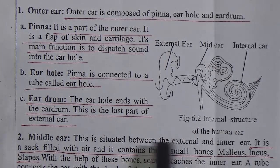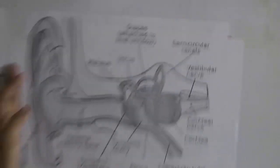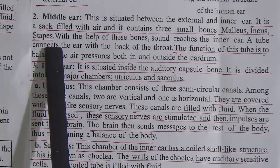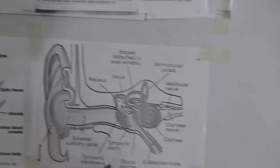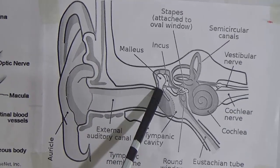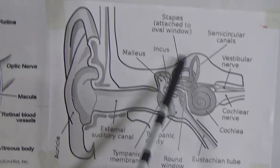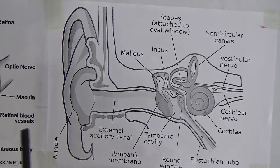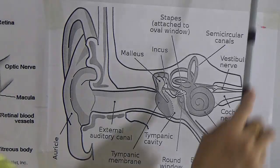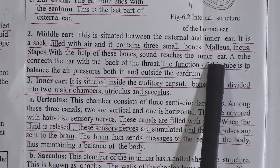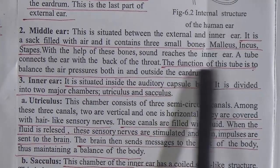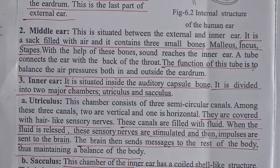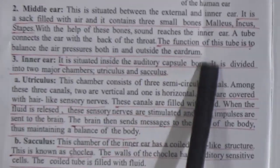The middle ear is situated between the external and inner ear. It is a sac filled with air and contains three small bones: malleus, incus, and stapes. Stapes is the smallest bone of our body. With the help of these bones, sound reaches the inner ear. A tube connects the ear with the back of the throat. The function of this tube is to balance the ear pressure both inside and outside the ear drum.